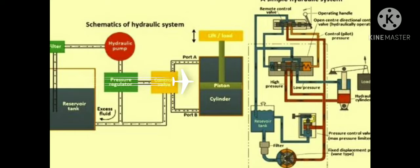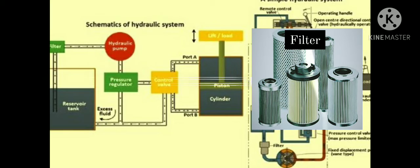Now, see the block diagram of the hydraulic system. Firstly, the liquid from the fluid tank goes to the hydraulic pump via filter. Here, we use filter because filter removes all unwanted particles or contaminants from the liquid and it goes to the hydraulic pump.